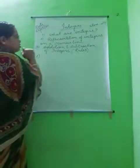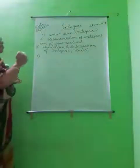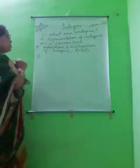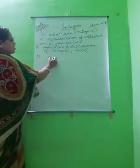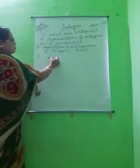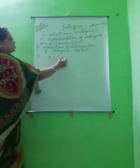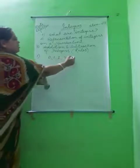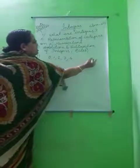Students, you have already known what are whole numbers. Whole numbers are 0, 1, 2, 3, 4, and so on.